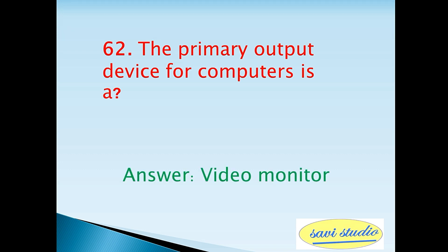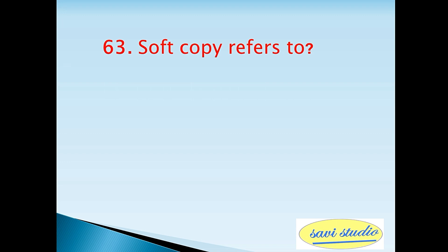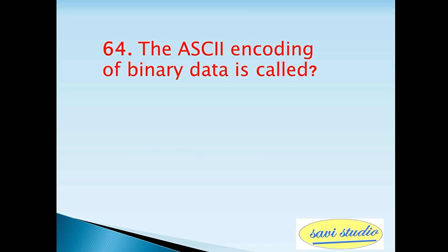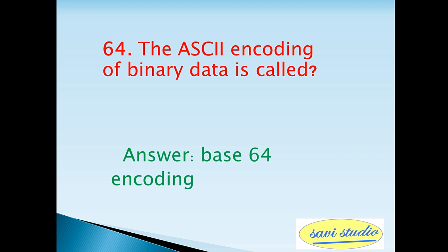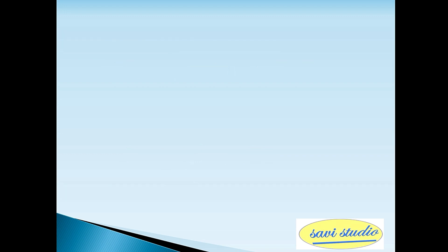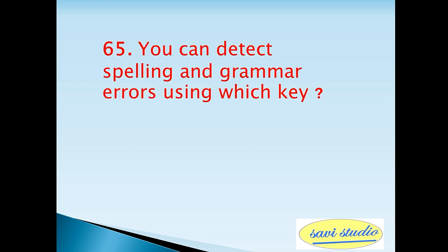Sixty-second question: the primary output device for a computer is — answer: video monitor. Sixty-third question: soft copy refers to — answer: screen output. Sixty-fourth question: the ASCII encoding of binary data is called — answer: Base 64 encoding.